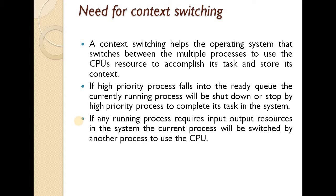Another condition requiring context switching is when a running process requires I/O resources. For example, if process A wants to print output, while waiting for the printout, another process B can be taken for execution. Process A is removed from the CPU and process B runs, requiring the CPU to switch its context from process A to process B.